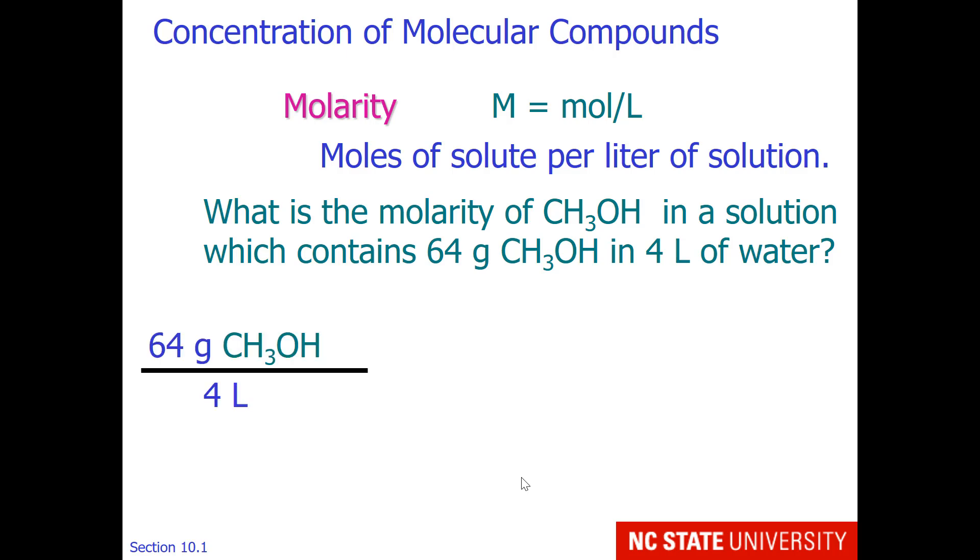First, we'll start by taking the ratio that we're given, 64 grams over 4 liters. We need to convert that to moles per liter. So I trust you realize that we will just have to divide by the molar mass. You notice that grams of methanol cancel out. We are left with the units that we want, moles per liter. This turns out to be 0.5 molar.